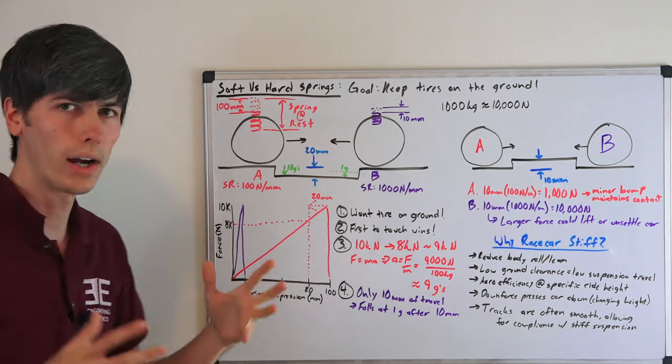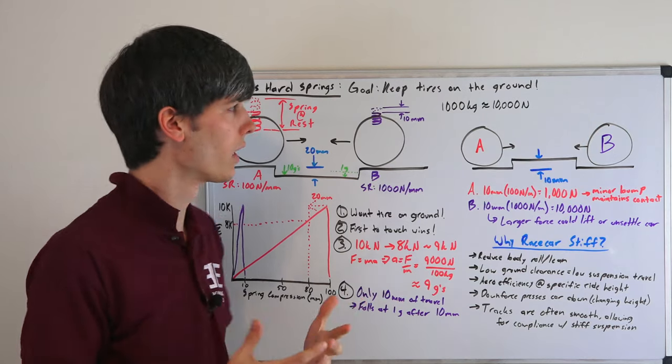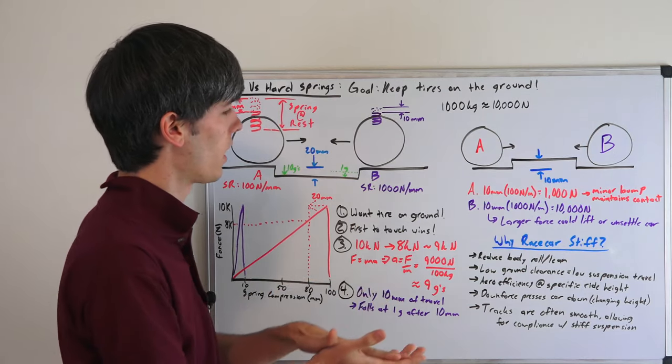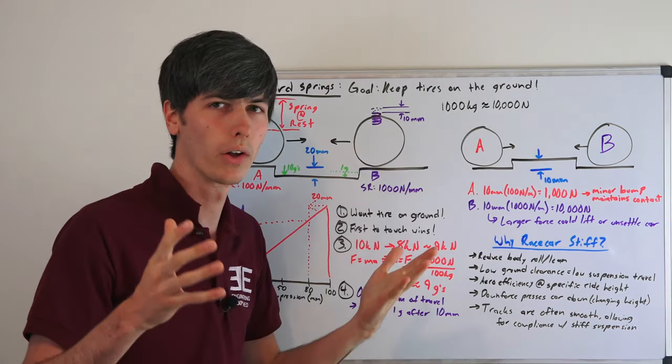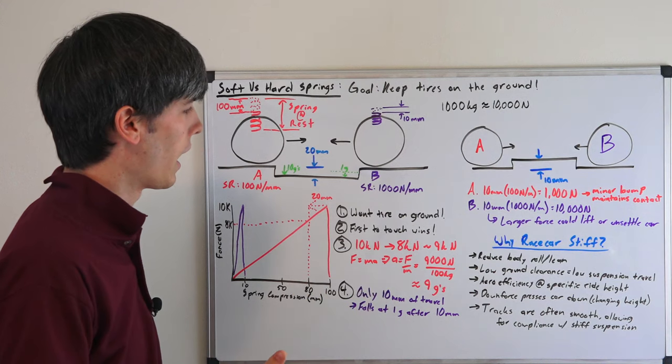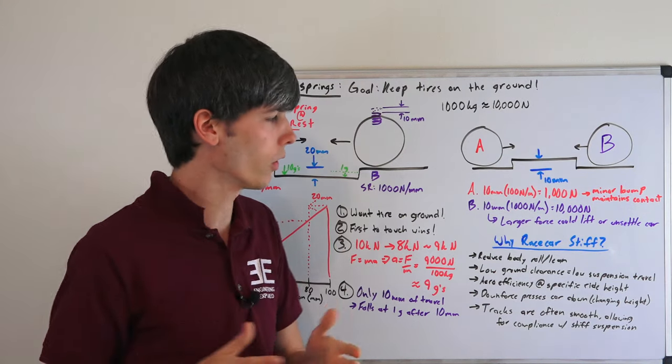So that kind of explains why a softer spring makes more sense because it keeps the tire in contact with the ground. So why do race cars have such stiff suspensions? Well, there's actually a lot of really good reasons. They don't exactly apply to road cars though.